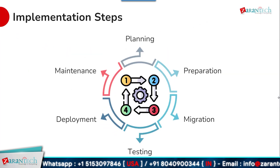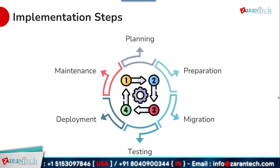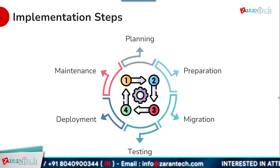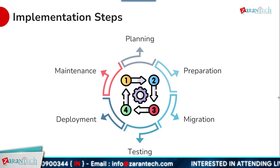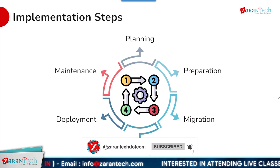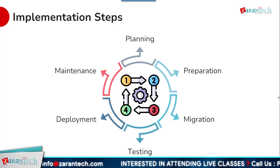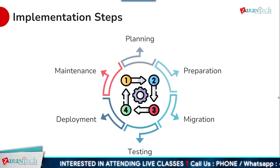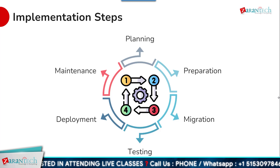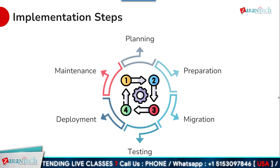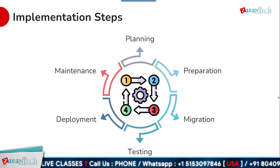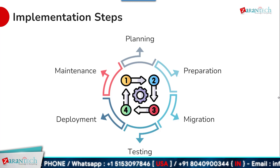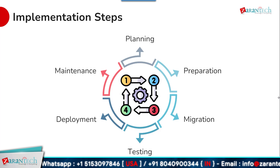Successfully implementing SAP S/4HANA Public Cloud involves several key steps. The first phase is thorough planning to define project scope, timeline, and resource requirements. This is followed by preparation activities like data cleaning, process mapping, and solution design. The next step is deployment, including configuration, customization, and integration. Robust testing is critical to identify issues before go-live. The cutover requires careful migration of data and processes from legacy systems, followed by ongoing maintenance and support.